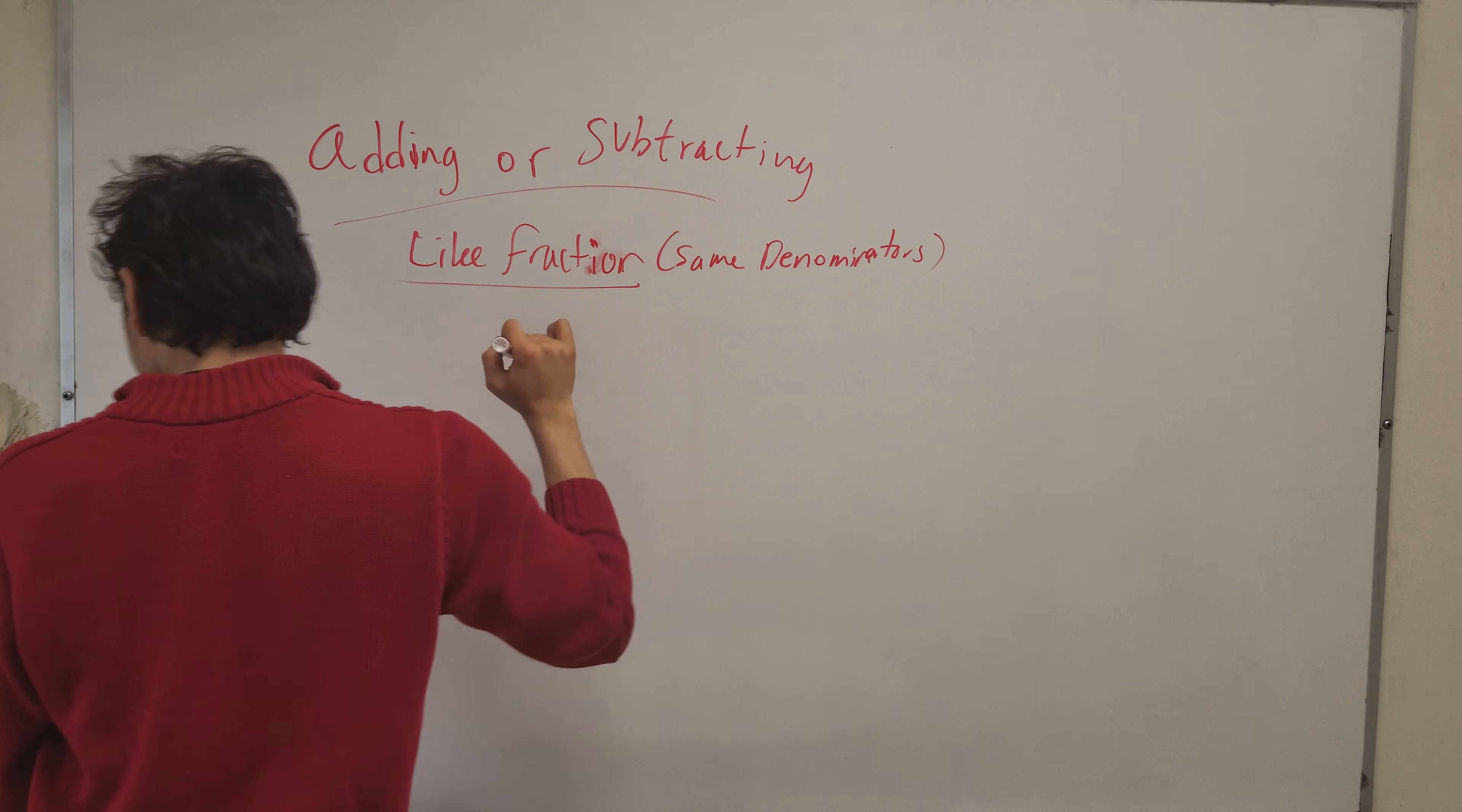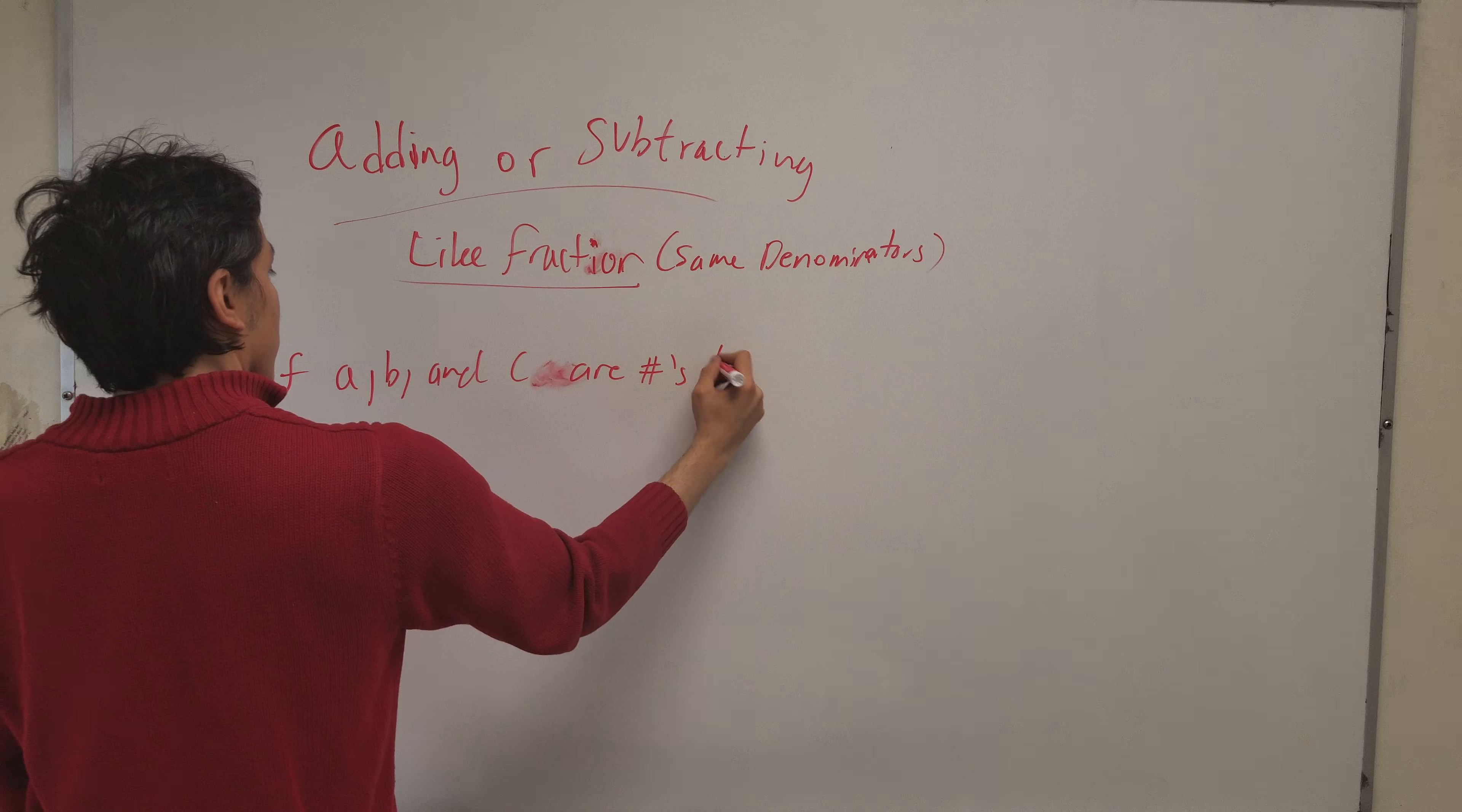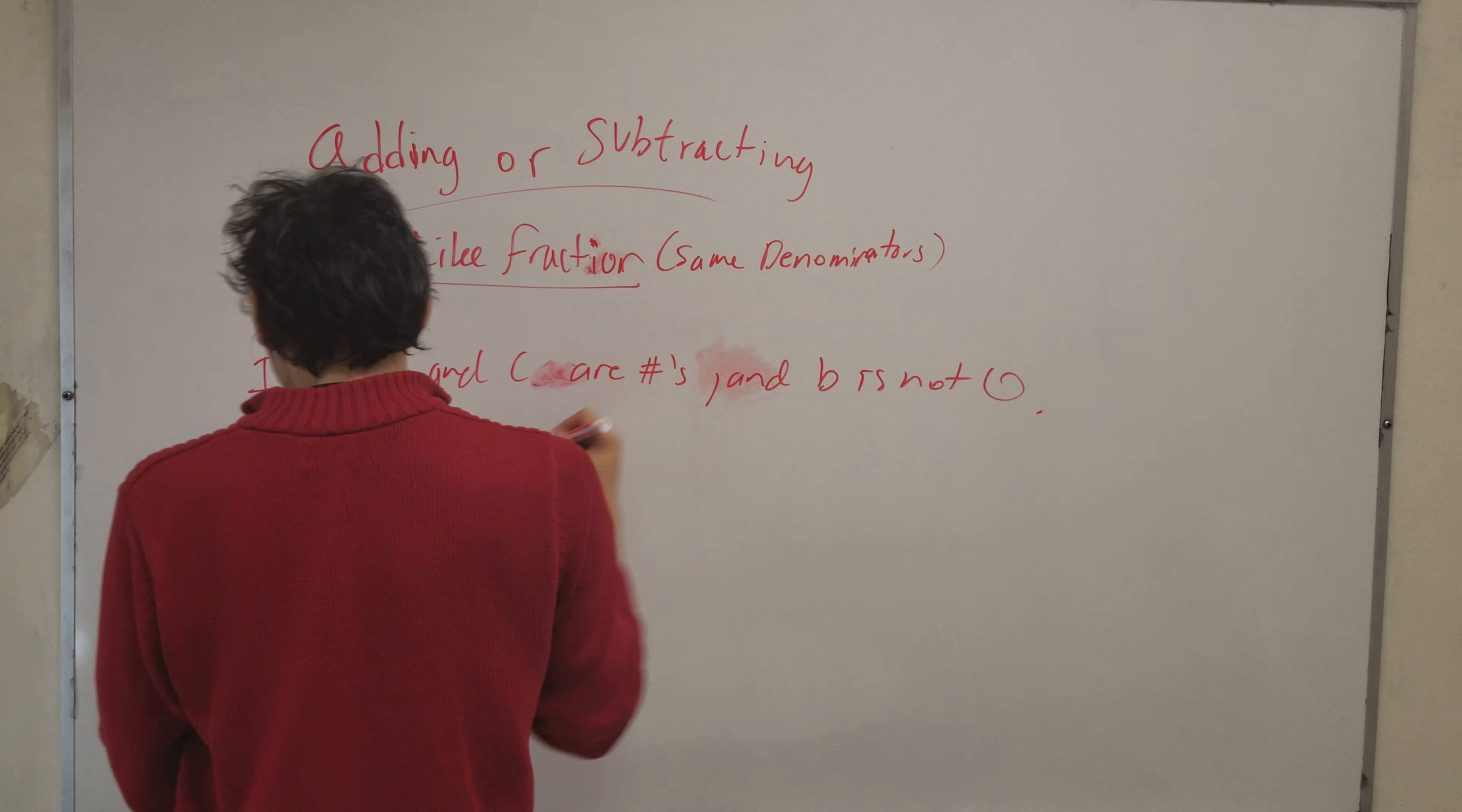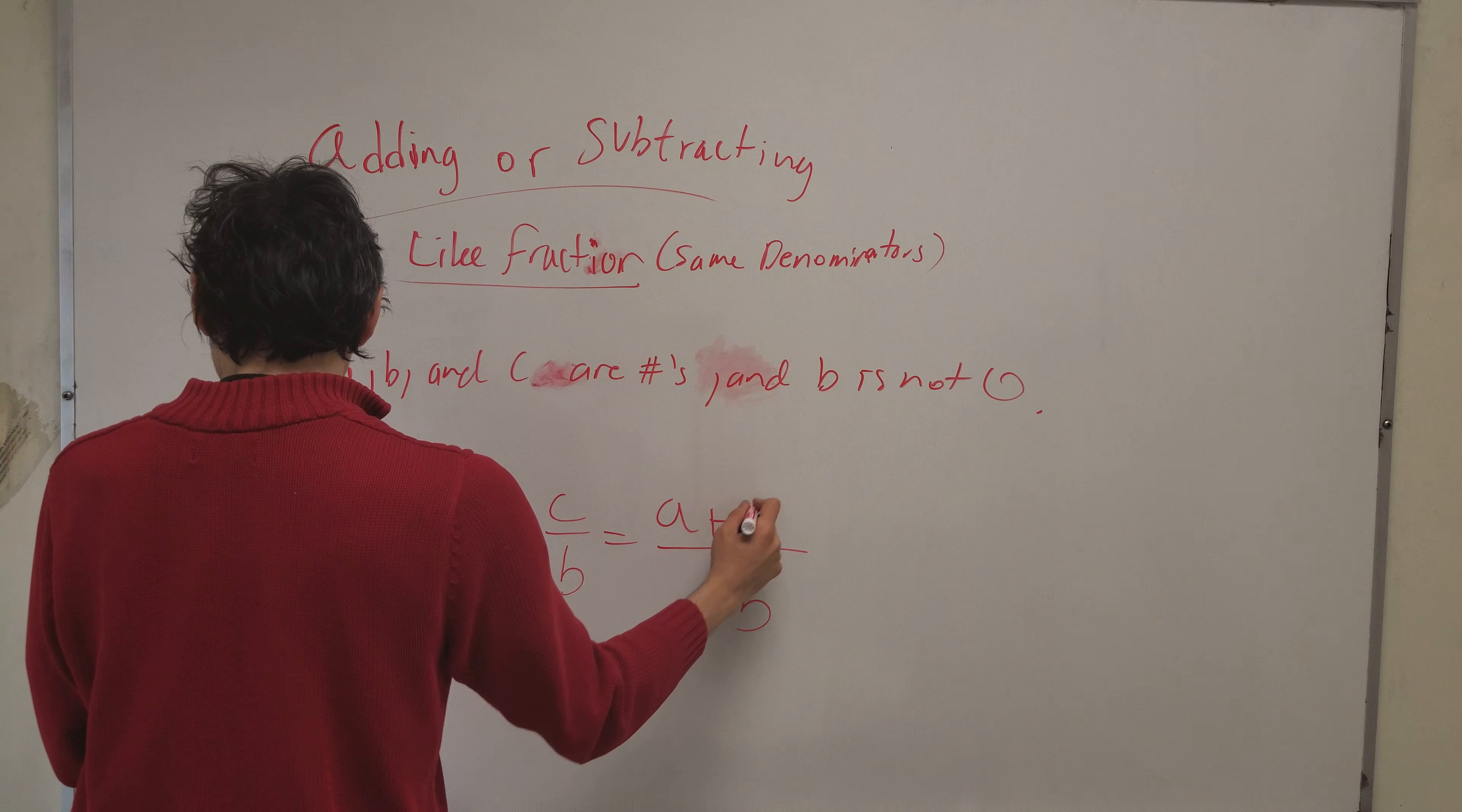Alright, so in general if A, B, and C are numbers, and B is not zero, then you're allowed to do this. A over B plus C over B. You're allowed to combine these two denominators and it becomes one big one and then you have A plus C.